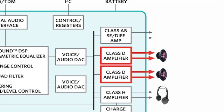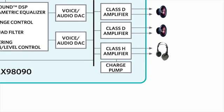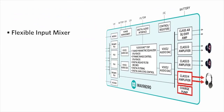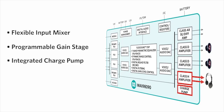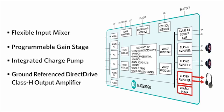The amplifier includes active emissions limiting to minimize the radiated emissions traditionally associated with class D. In most systems, no output filtering is required. The stereo headphone output driver has a flexible input mixer, programmable gain stage, an integrated charge pump, and a ground-referenced direct-drive class H output amplifier.